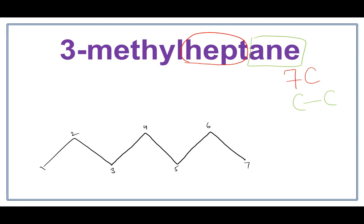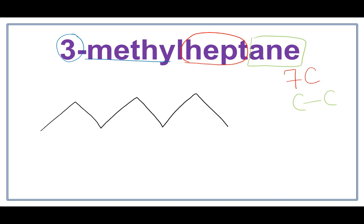There is a methyl attached on the third carbon, which is right here. Let's get rid of these numbers and attach a methyl on the third carbon. So, on the third carbon we have a methyl attached. This is the structure for 3-methylheptane.